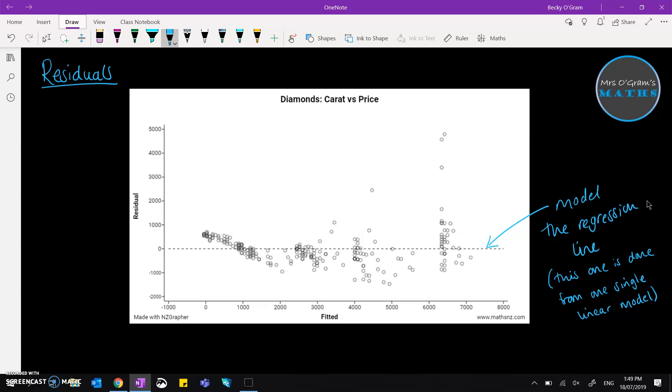Next is thinking about what the axes are showing us. The default label on the x-axis is fitted, and this is referring to the response variable, which means what was on the y-axis of the original graph. So in this particular instance it's the price. And then the residuals that we have on the y-axis, that's how much it differs from the line that we've got.